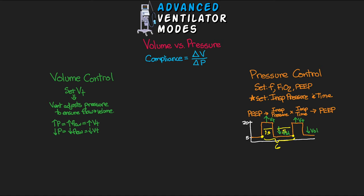When pressure is higher, air moves into the patient's lungs and volume is delivered. As the pressure drops back to PEEP, pressure is higher in the lungs and air leaves, providing expiration. Looking back at our compliance equation, for any given pressure set, the patient's volume is determined by their lung compliance. So if we want to increase volume we need to increase the pressure — we're not directly controlling that volume, we're changing the pressure which determines how much volume the patient gets.